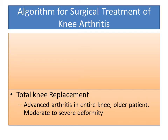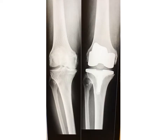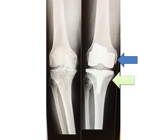Total knee replacement is indicated for advanced arthritis in the entire knee for the older patient who has moderate to severe deformity. This is illustrated by a 60-year-old patient with tricompartmental arthritis and a severe varus deformity — the femoral component, the tibial component, and the plastic in between. In this patient, a partial knee replacement would not have been satisfactory in correcting the overall deformity, and the arthritis was not localized to one compartment. A total knee replacement enabled correction of the deformity and comprehensive treatment of the arthritis.